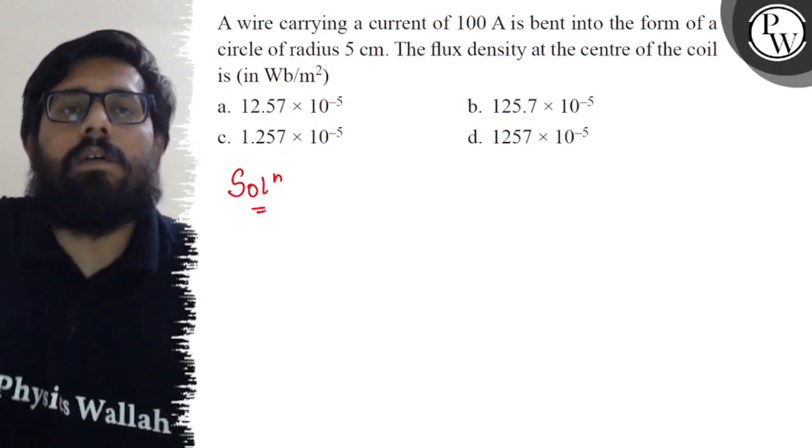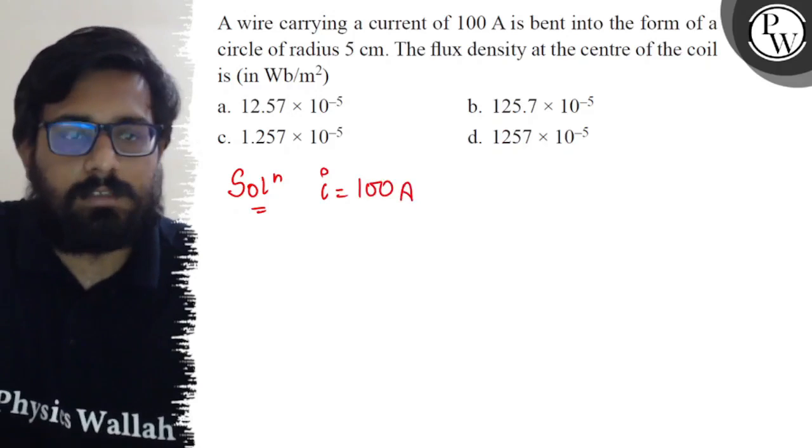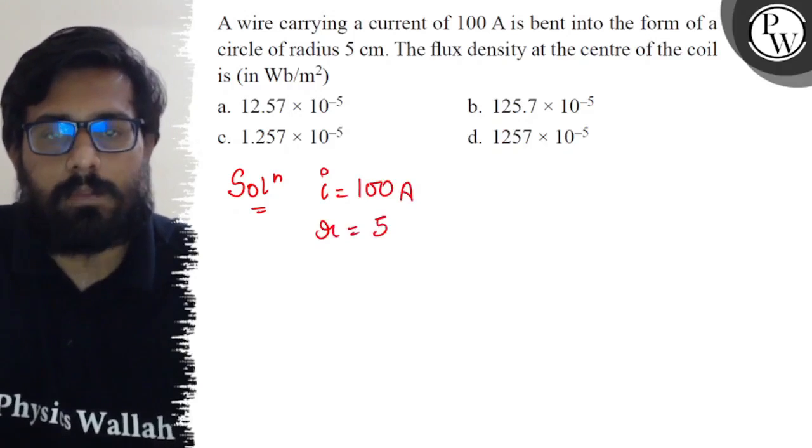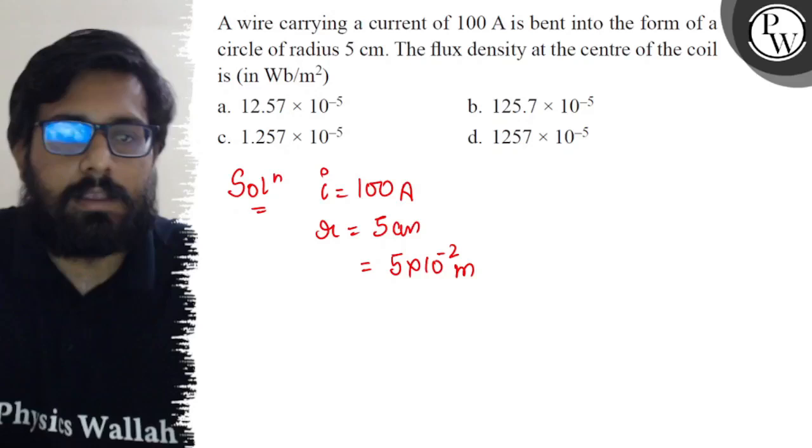So we have a wire having a current of 100 ampere bent into the form of a circle of radius 5 centimeter. 5 centimeter can be converted into meters as 5 × 10⁻² meters is the radius.